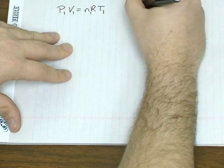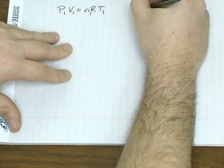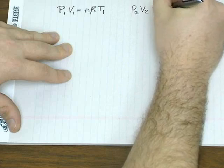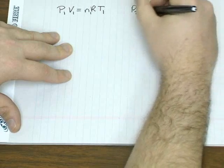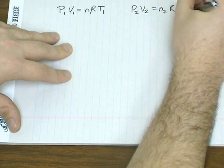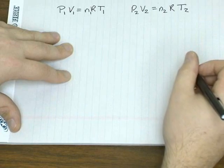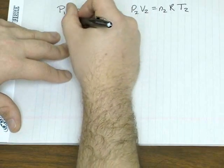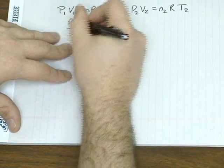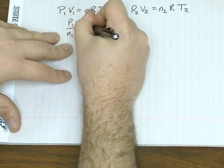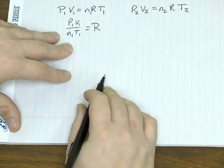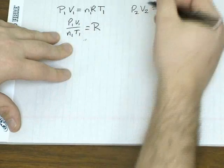say you have another set of pressure, volume, amount, and temperature, rewrite both equations and set them equal to R.